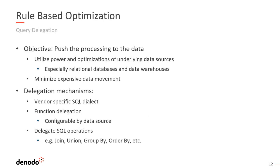In a bit more detail on rule-based optimization: the objective is to push the processing down to the data, ultimately utilizing the power and optimizations of the underlying data sources. We're often dealing with data warehouses which are very expensive hardware, typically with a lot of CPUs, and they handle aggregations and filtering very well. It's much better to push those workloads down to the underlying source rather than pull all that data back to Denodo. Also, this is not a generic SQL optimization — Denodo is very aware of vendor-specific SQL dialects. Connecting to a SQL Server source will generate very different SQL statements than connecting to a Teradata source.